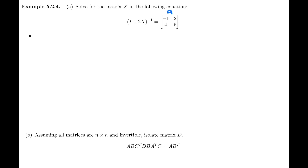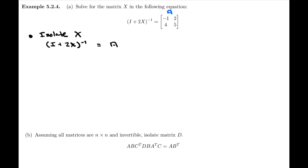As we did in previous examples, the first step is always to isolate the matrix X. To do that, I'm going to start with I plus 2X inverse on one side, and the matrix A on the other side. The first step in isolating here is going to be to take the inverse on both sides.